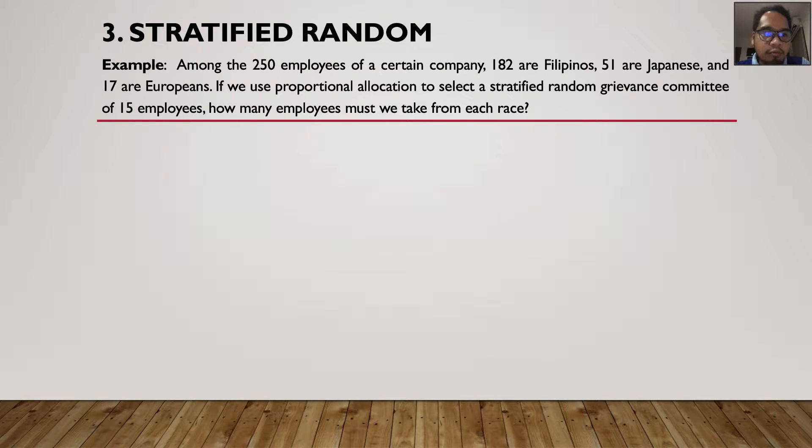Among the 250 employees of a certain company, 182 are Filipinos, 51 are Japanese, and 17 are Europeans. If we use proportional allocation to select a stratified random grievance committee of 15 employees, how many employees must we take from each race?